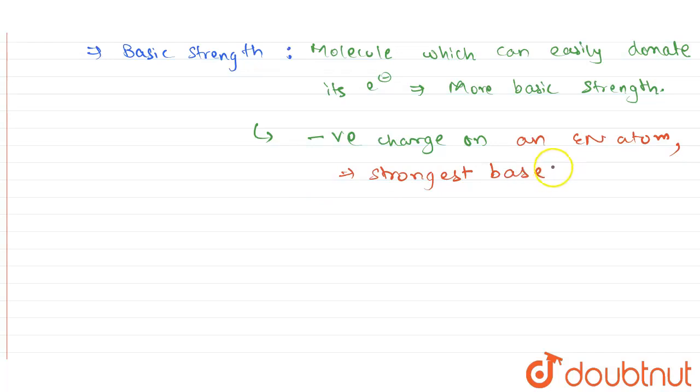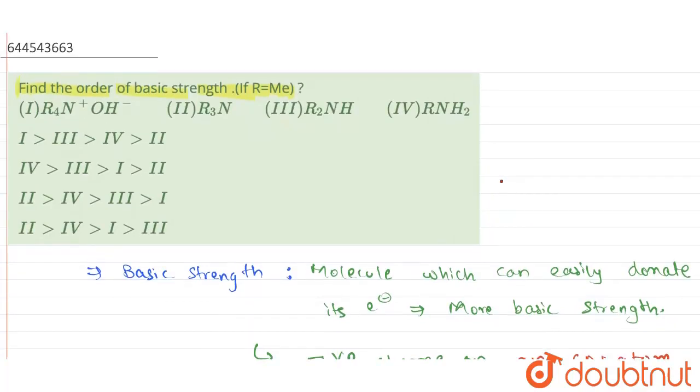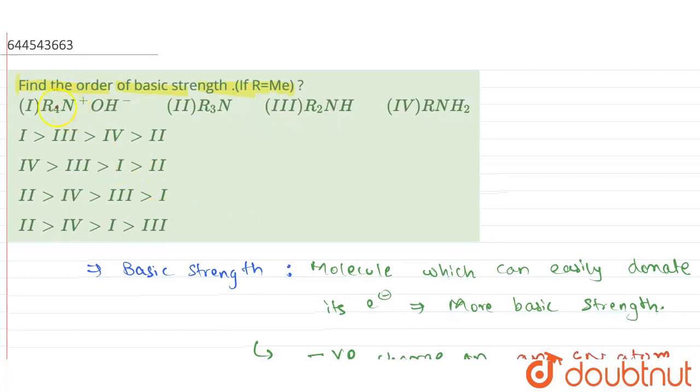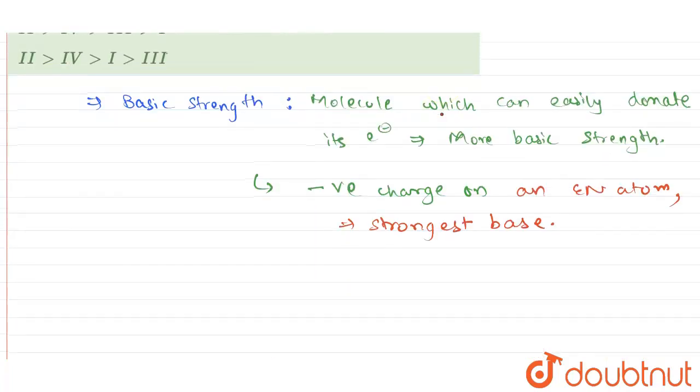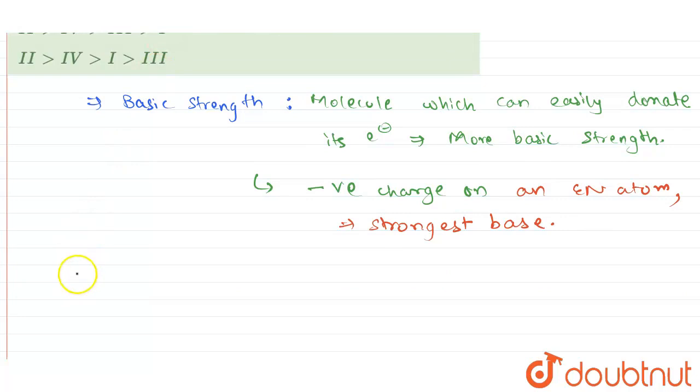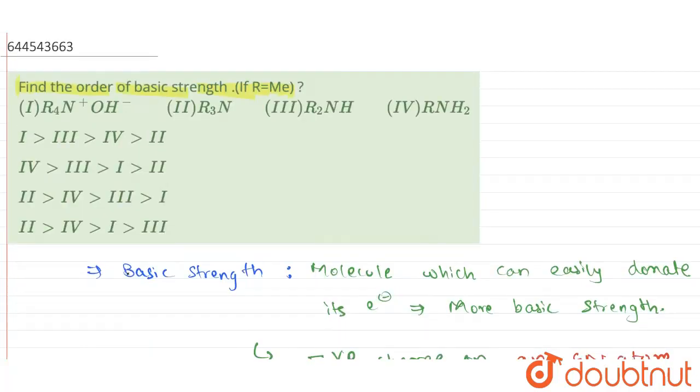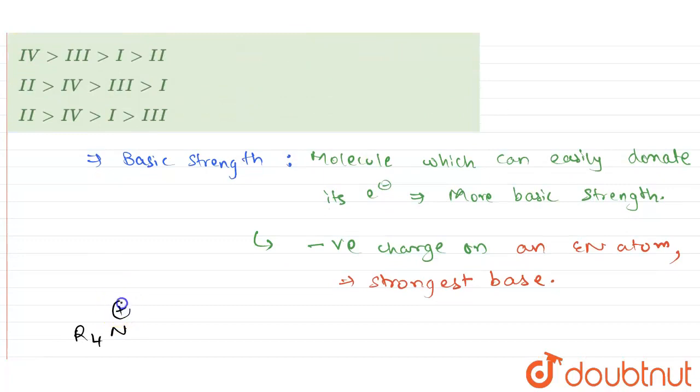Now if you see the options which is given to us here, we have R4N+ OH-, then we have R3N, R2NH, and RNH2. So we'll write down all the options which are given to us. First of all we have R4N+ OH-.